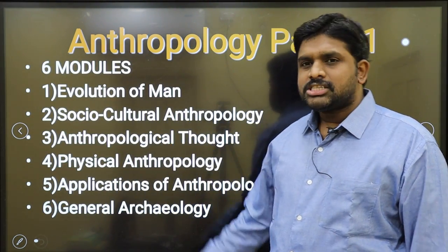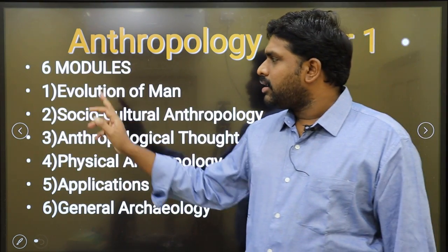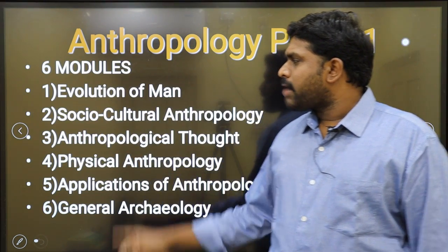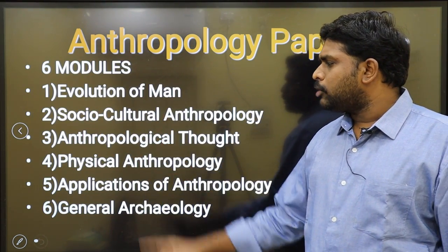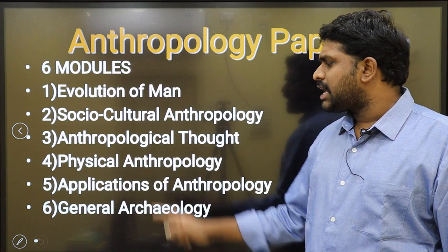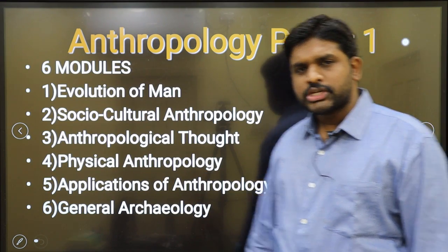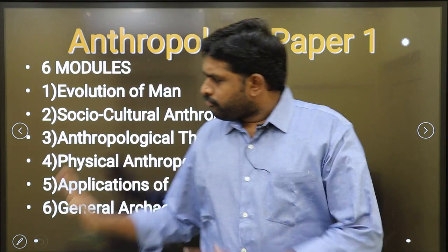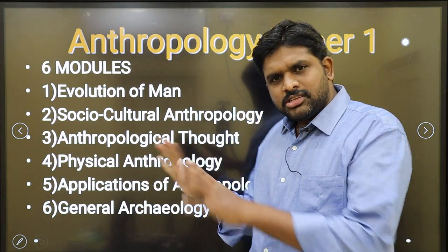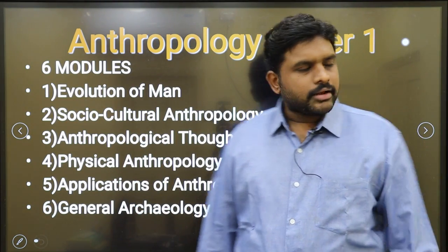So these are the six modules in anthropology paper one: evolution of man, socio-cultural anthropology, anthropological thought, physical anthropology, applications of anthropology, and general archaeology. Simplification — only six modules are there.